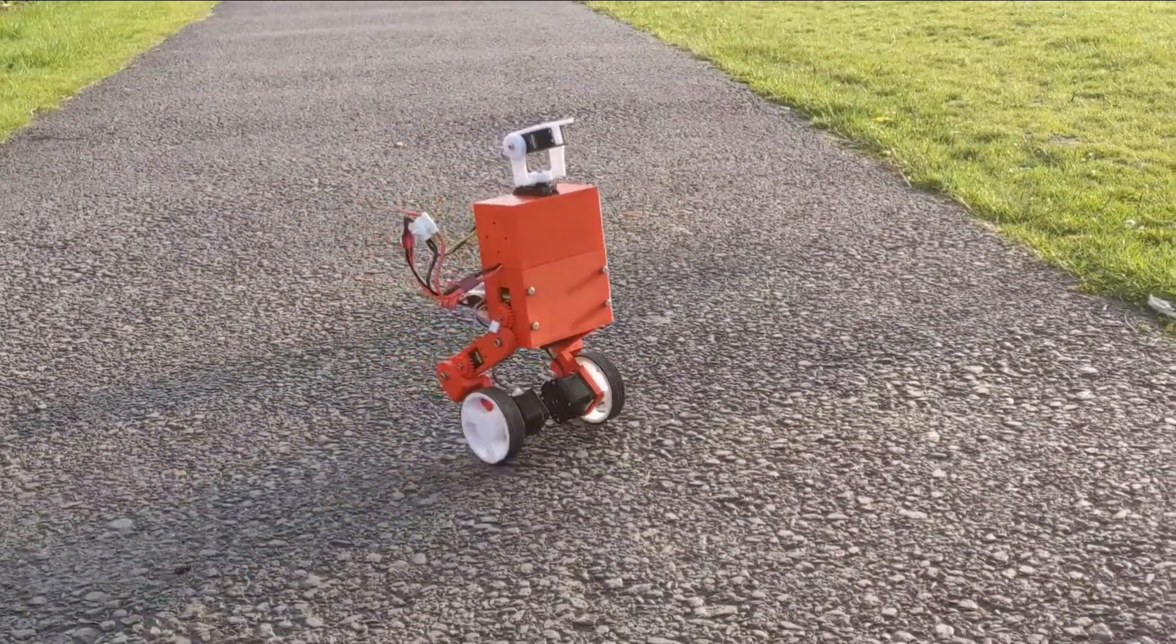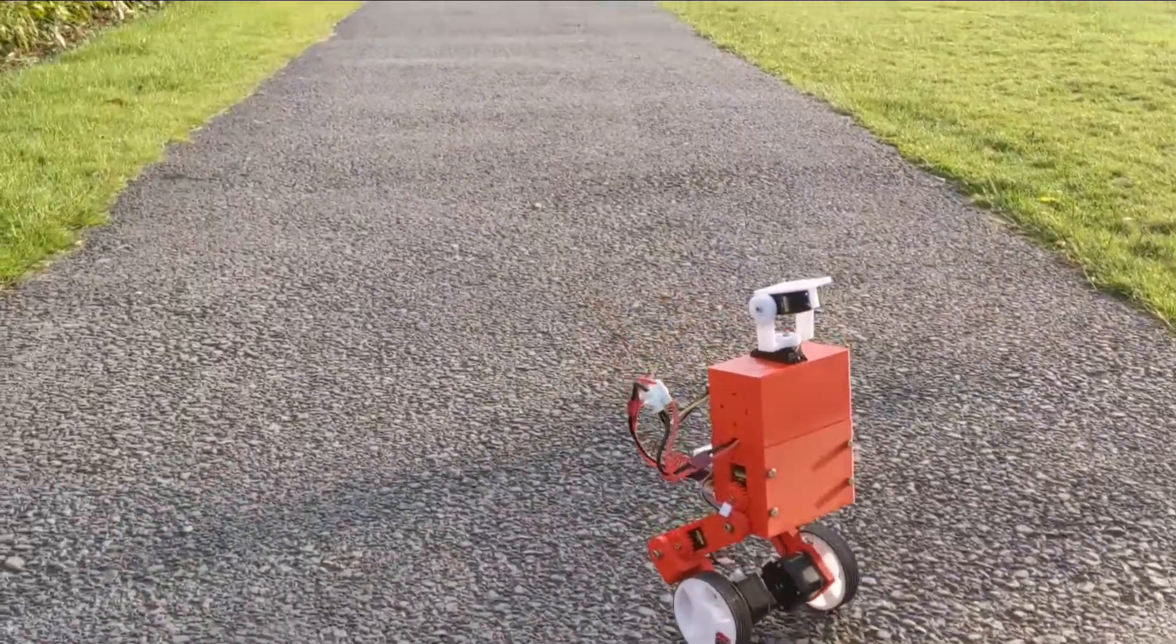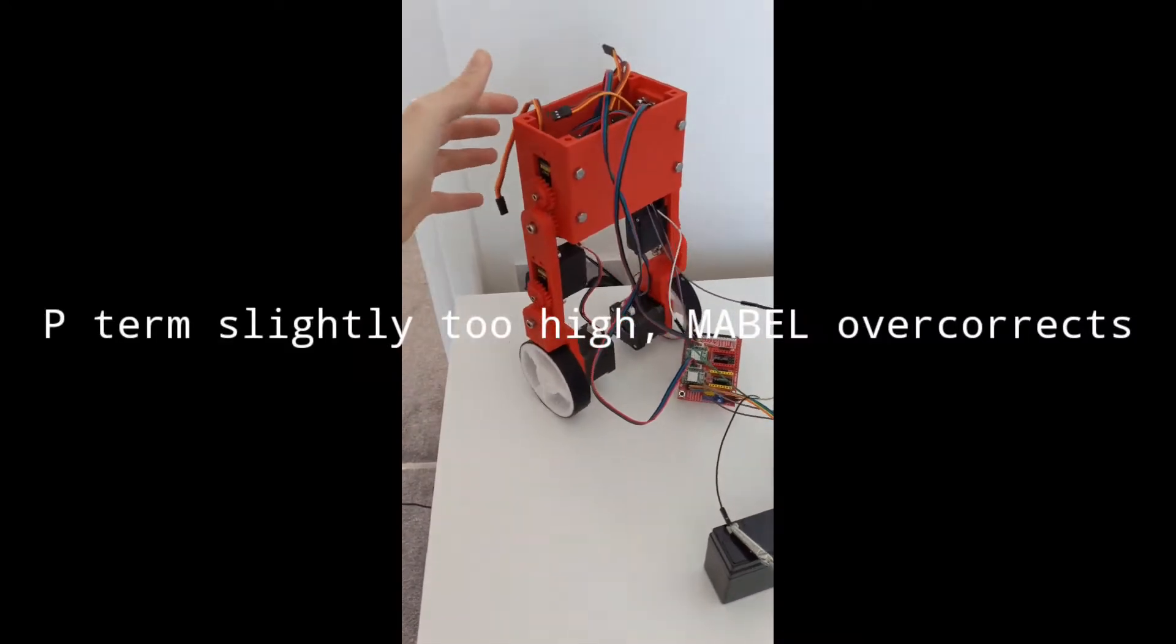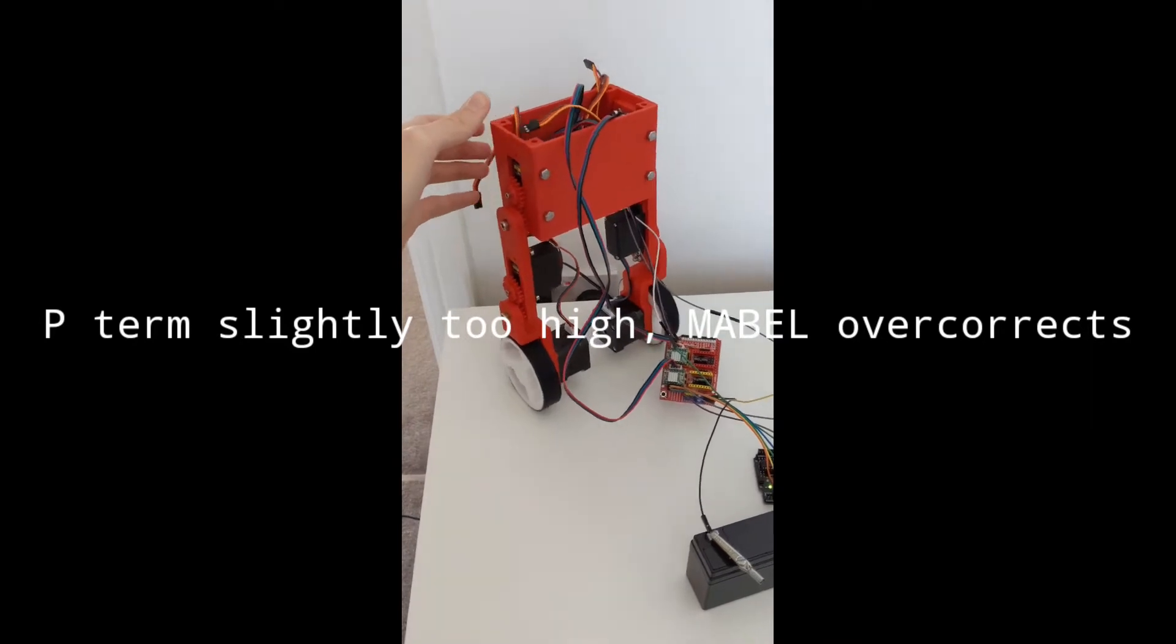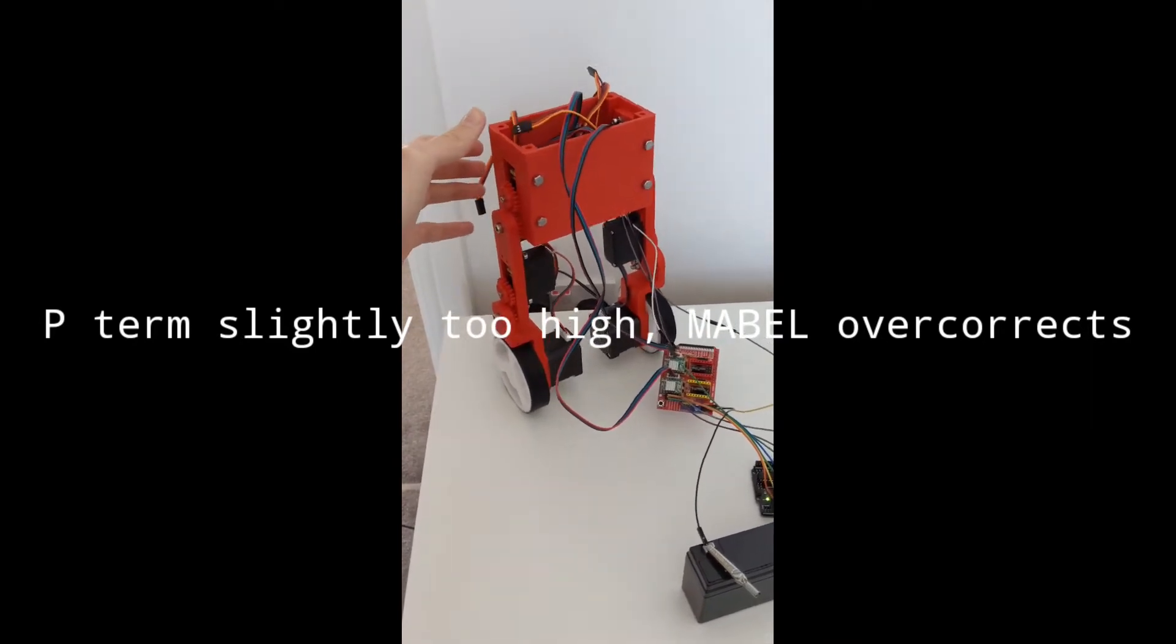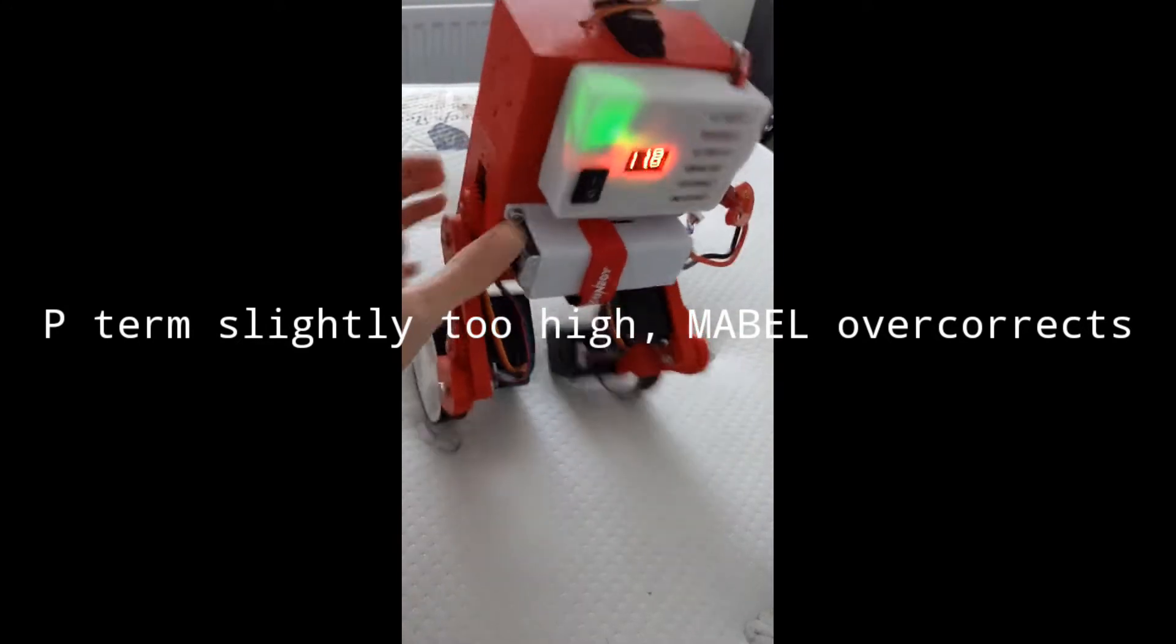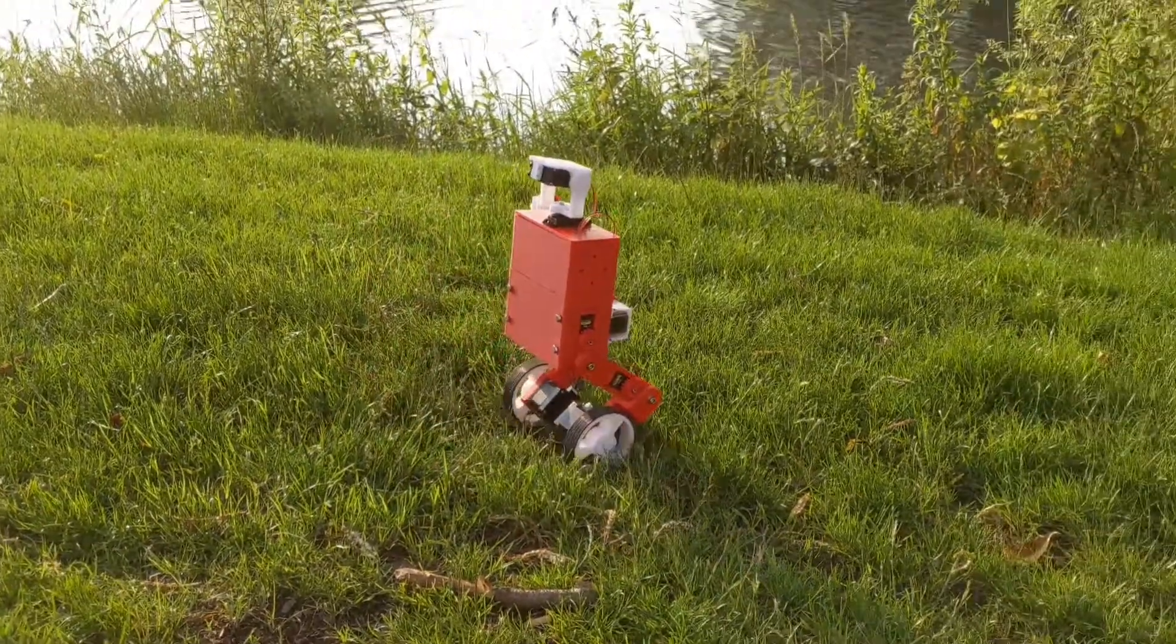To tune the PID controller we first need to choose some initial values. We first need to start by altering the P term or the proportional term. If this is too high it's going to start over-correcting - it's going to wiggle backwards and forwards and tip over. But if it's too low it won't balance at all and it will just tip over. So this is the thing we want to get just right.